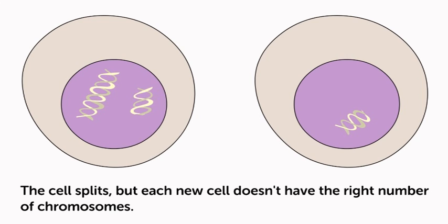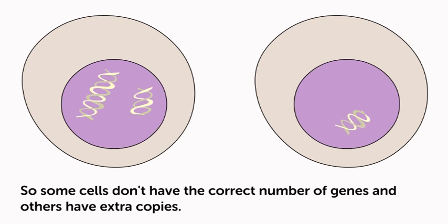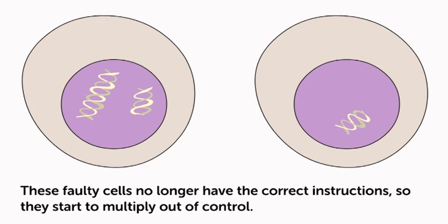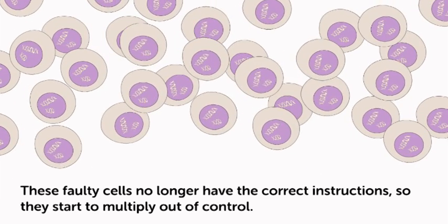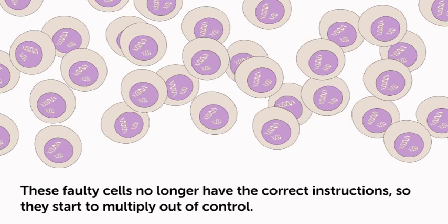The cell splits, but each new cell doesn't have the right number of chromosomes. So some cells don't have the correct number of genes, and others have extra copies. These faulty cells no longer have the correct instructions, so they start to multiply out of control.